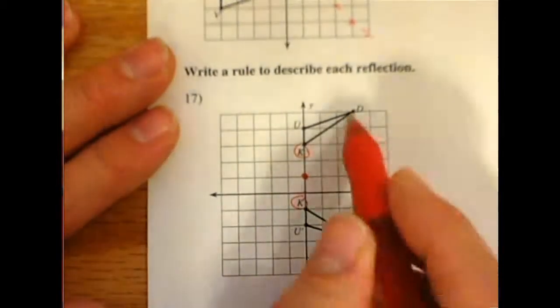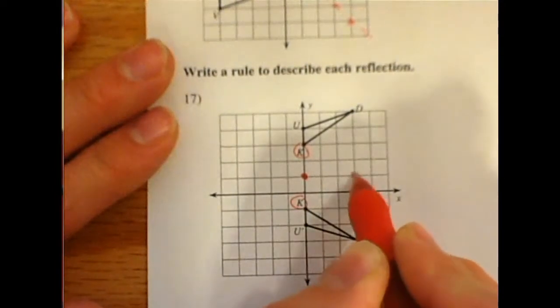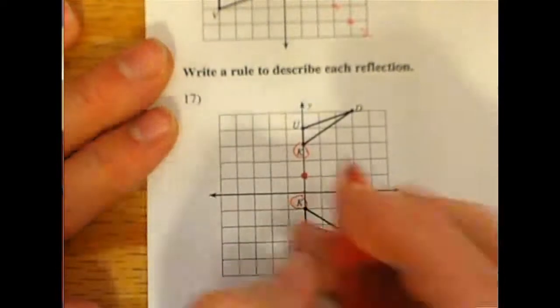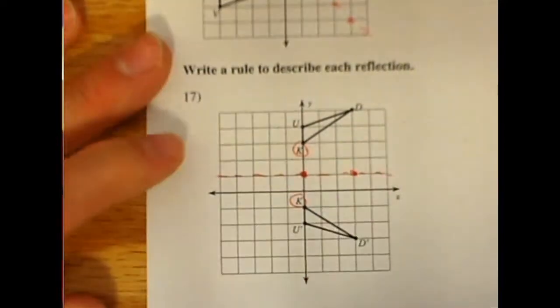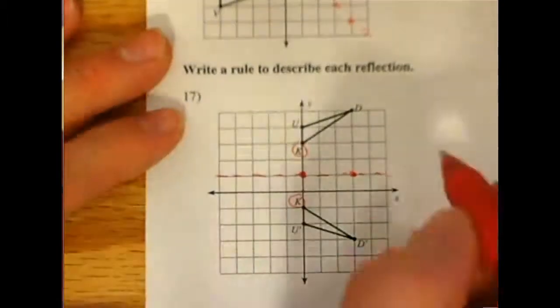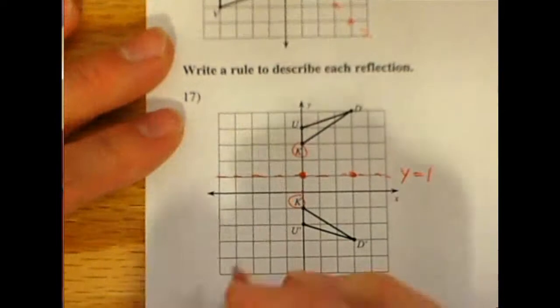And if I look at my halfway point between d and d prime, it looks like it's going to be right here. And then u and u prime also have a midpoint right here. So we're looking at a horizontal reflection line that goes straight across at y equals 1. That horizontal line, because y is always 1 here, is going to be the line y equals 1.